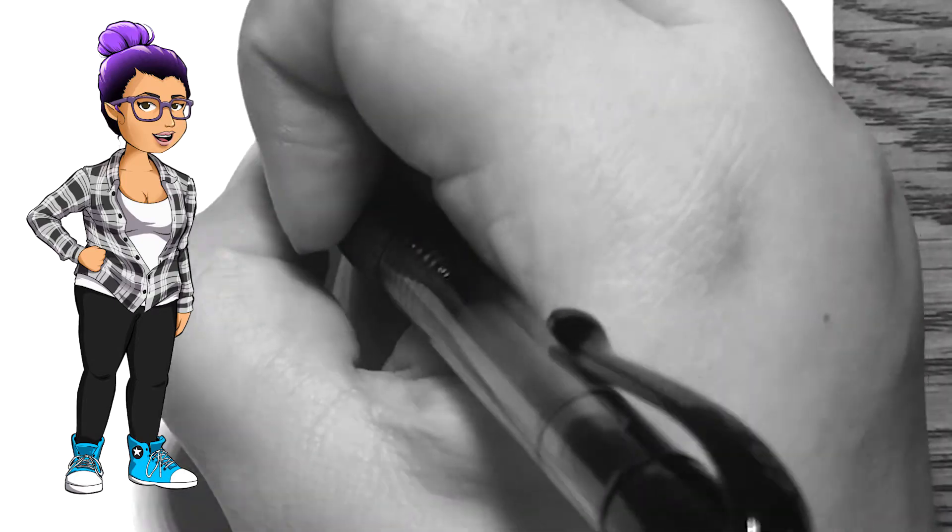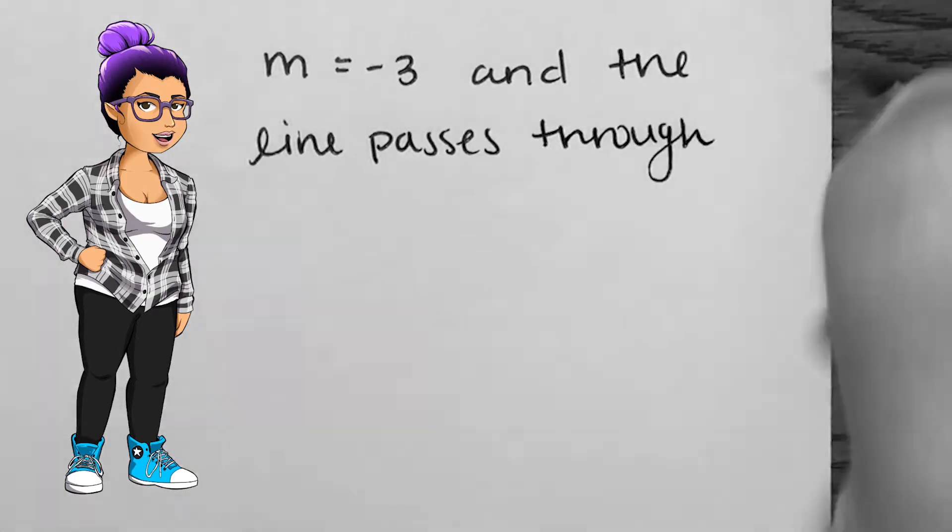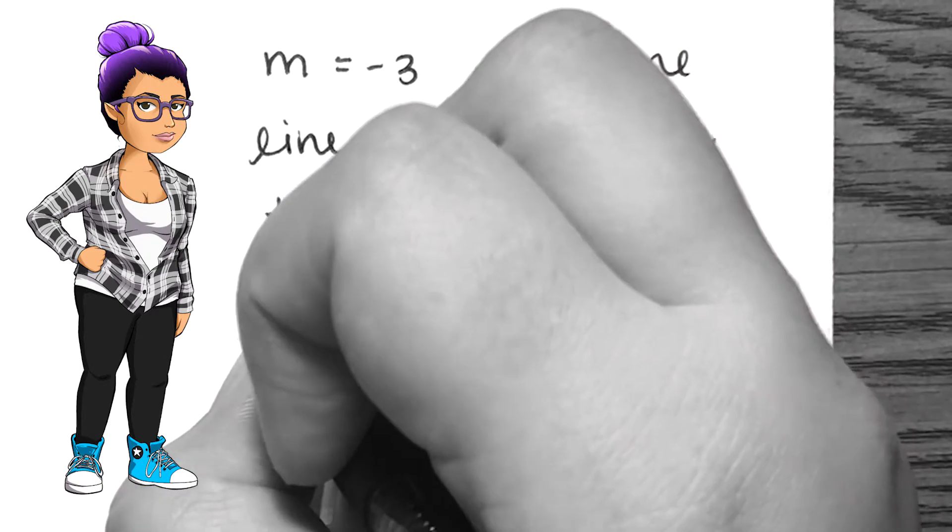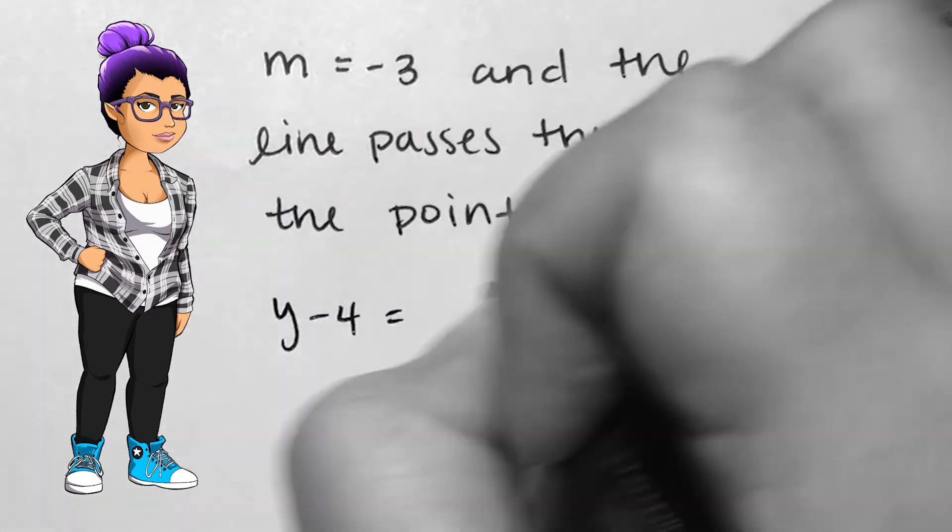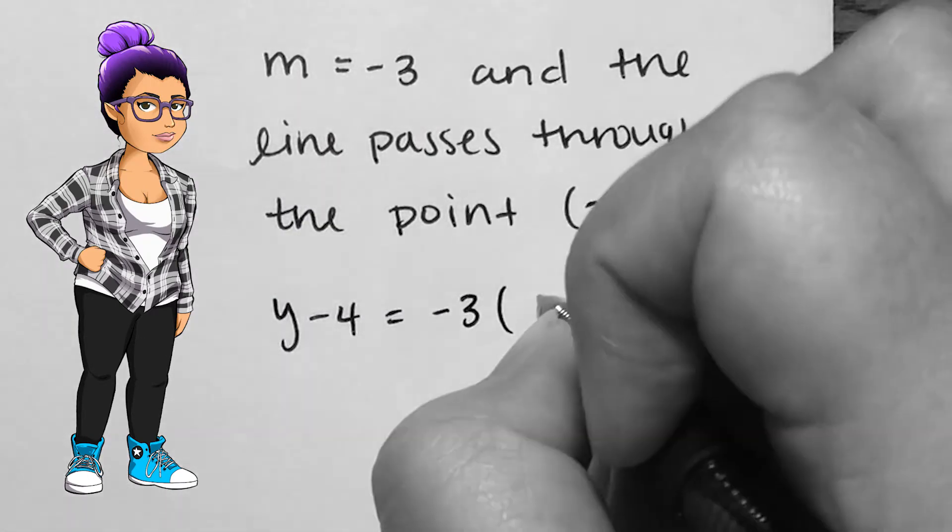The slope of a line is negative 3 and passes through the point (2, 4). Replacing the appropriate numbers I get y minus 4 equals negative 3 times x minus 2.